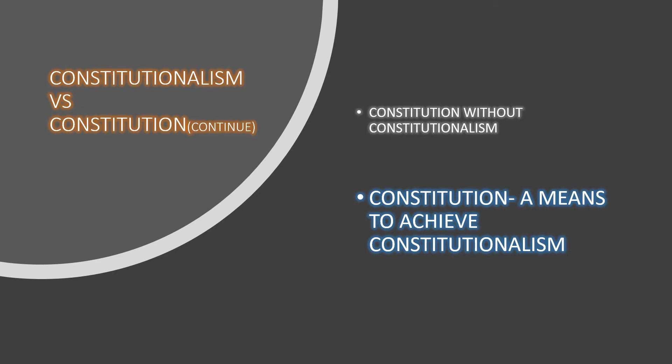Constitution is a means to achieve constitutionalism. Constitution joh hai woh government ki power ke upar hai. This arrangement, which forces the rulers to stay within their jurisdictions by means of a written constitution, is called constitutionalism.